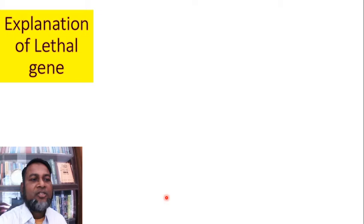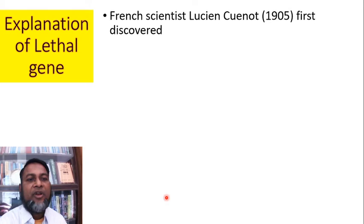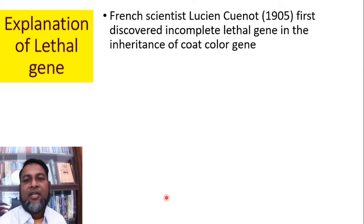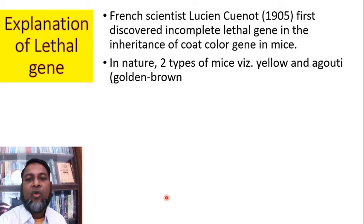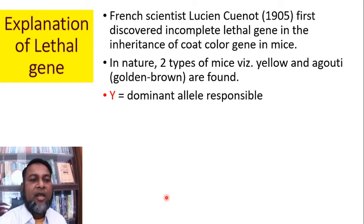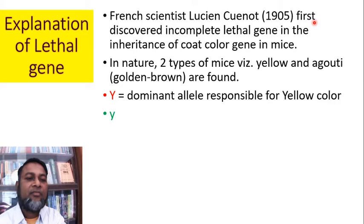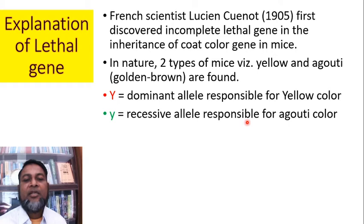Now we explain lethal genes. French scientist Louis Cuénot, in 1905, first discovered incomplete lethal genes in the inheritance of coat-colour genes in mice. There are two types of mice: yellow and agouti (golden brown). We use the genotype capital Y for the dominant allele responsible for yellow colour, and small y for the recessive allele responsible for agouti colour.